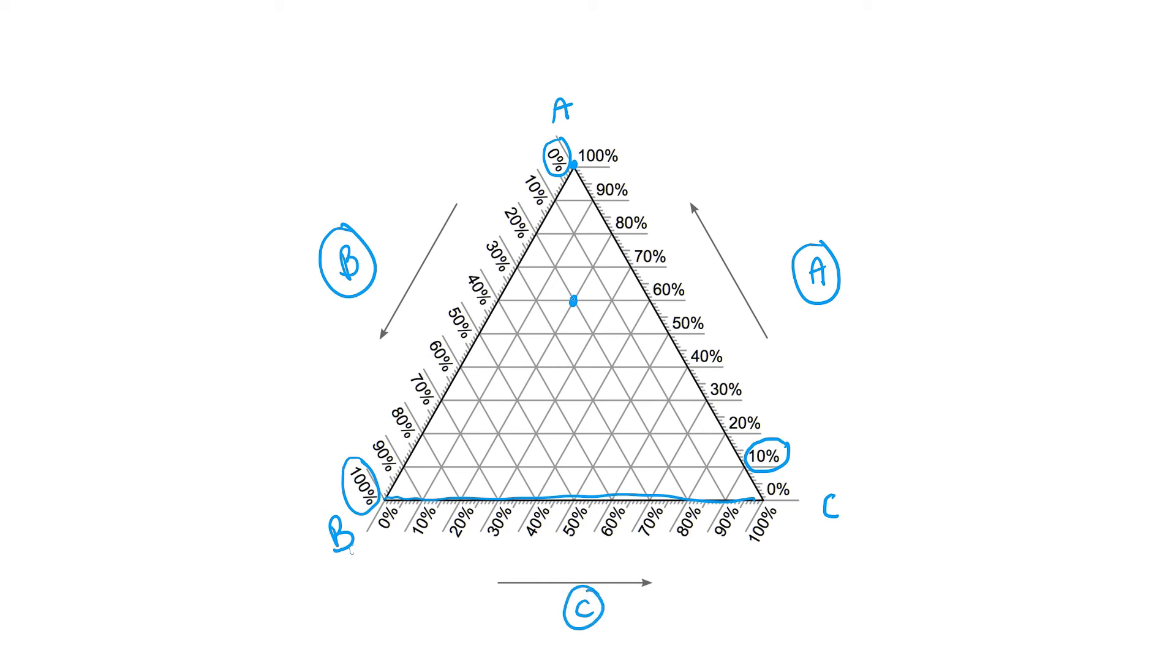Now if we look at this point again, using this, we can follow it along to see that this substance is 60% component A, 20% component B, and 20% component C.